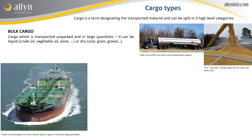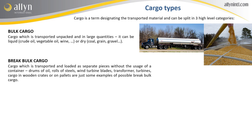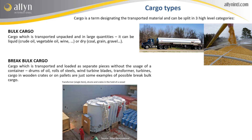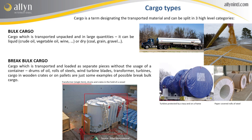like for example coal, grain, iron ore, gravel, corn, flour, or other. Then, we find the cargo which is transported as break bulk, meaning it is loaded as separate pieces without the usage of a container. It could be items like drums of oil, rolls of steel, or rolls of paper, cargo on pallets or in crates, or single items with or without protective packaging.